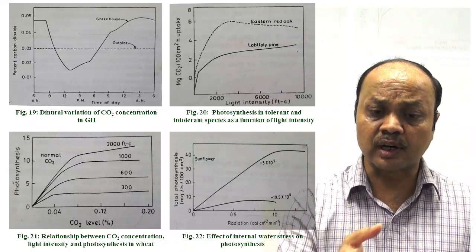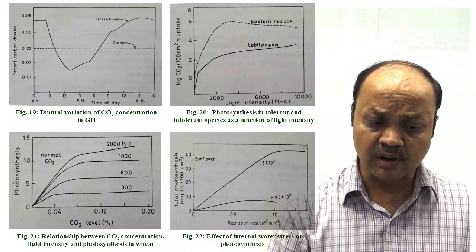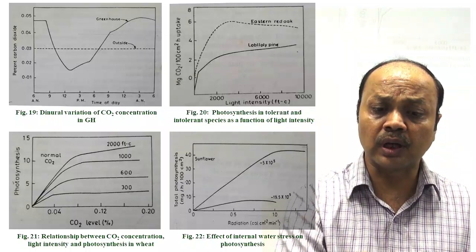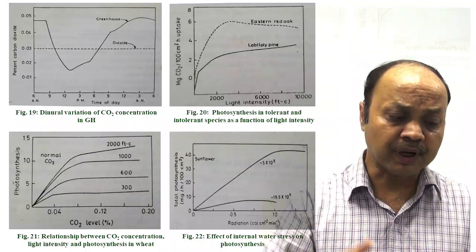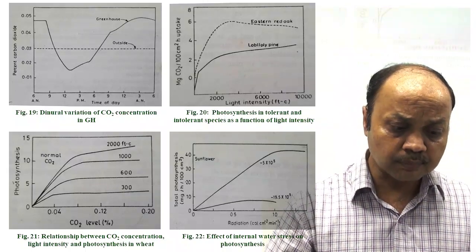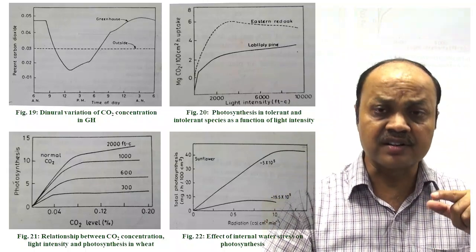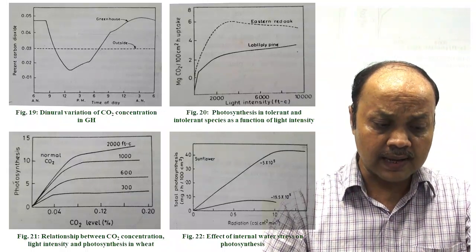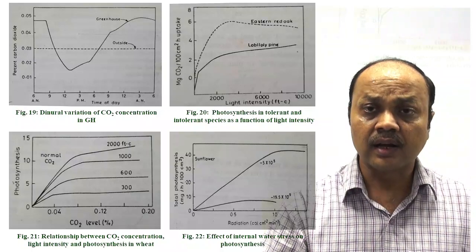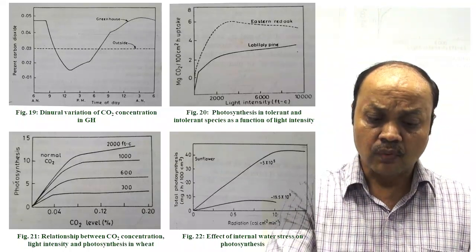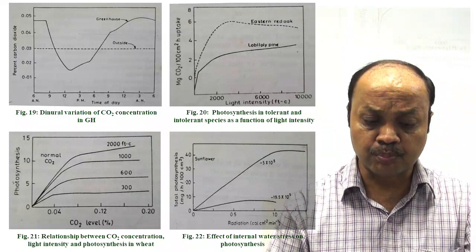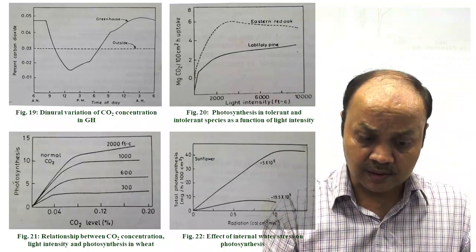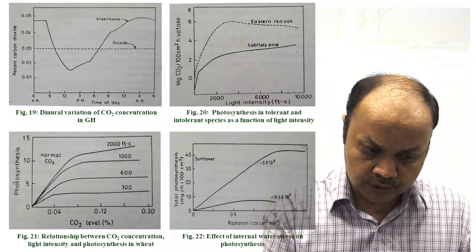Different factors depend on your crop variety — tolerant or intolerant species will affect CO2 and light intensity uptake differently. In figure 21, as light intensity increases, photosynthesis increases. If light is increased and other conditions are suitable, photosynthesis continues to rise. Water stress also affects CO2 uptake — for sunflower, at a particular light intensity, water stress significantly affects CO2 uptake.